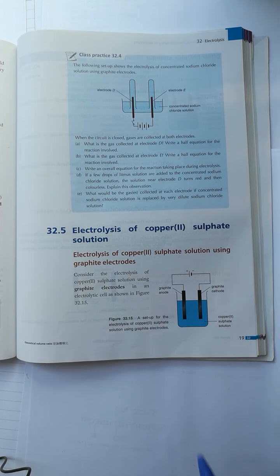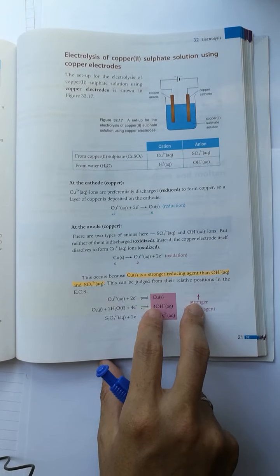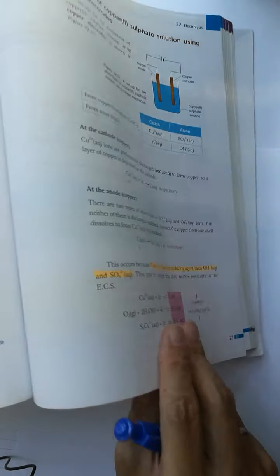You have a solution of copper(II) sulfate inside a beaker, then the graphite electrodes are connected to positive and negative terminals of the power supply and immersed into the copper(II) sulfate solution.